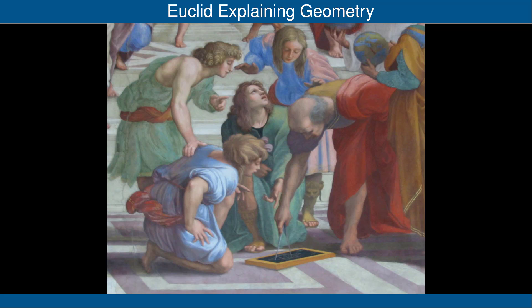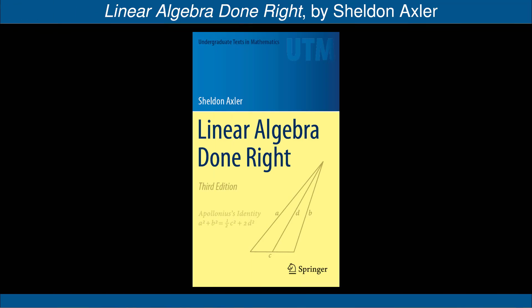Because this video included a discussion of rotations in the Euclidean plane R2, let's finish with a famous painting of Euclid explaining geometry. This is part of a painting called The School of Athens, painted by Raphael around 1510. The painting is currently located in the Vatican. This concludes part 2 of the video on operators on real inner product spaces. If you see a small picture of a slide in the upper left corner, you can click on it to get to the next video. If you see a small picture of part of the cover of Linear Algebra Done Right in the upper right corner, you can click on it to get to the book's website.